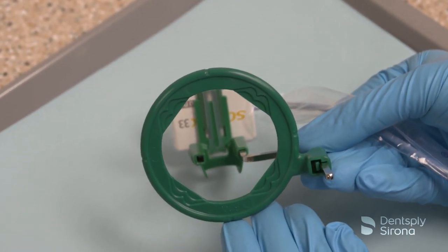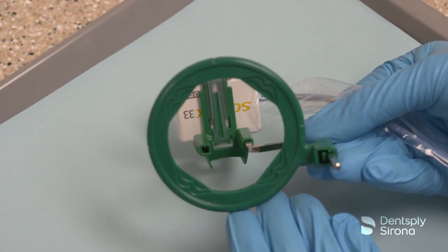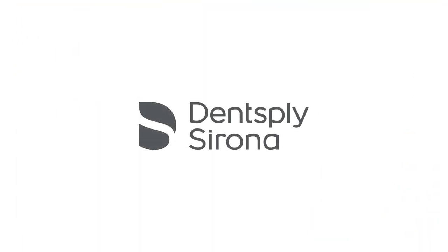Ensure that the image receptor is visible through the green aiming ring. Thank you for viewing this instructional educational video brought to you by Dentsply Sirona.